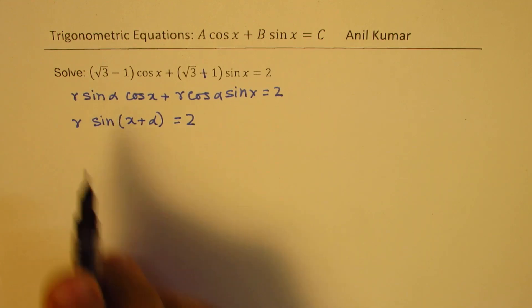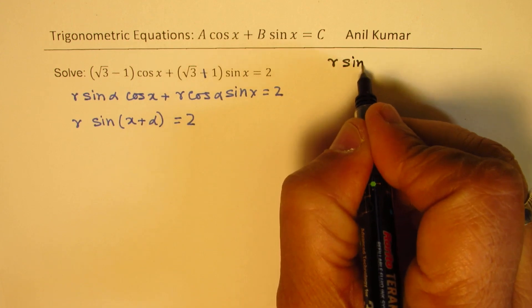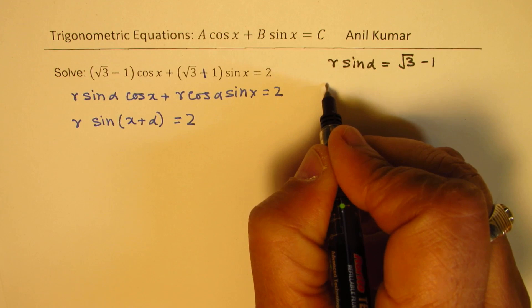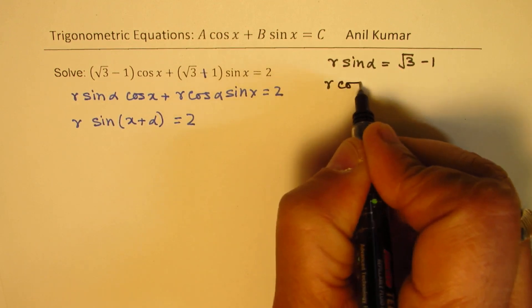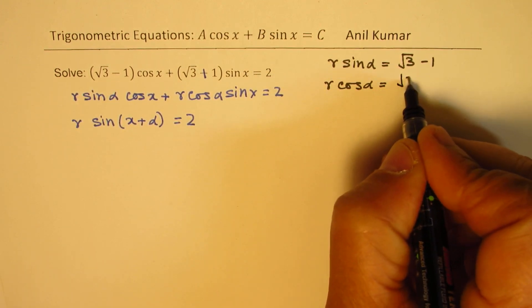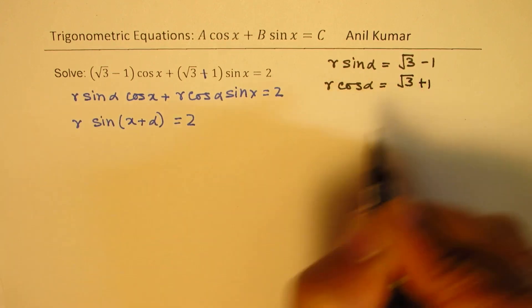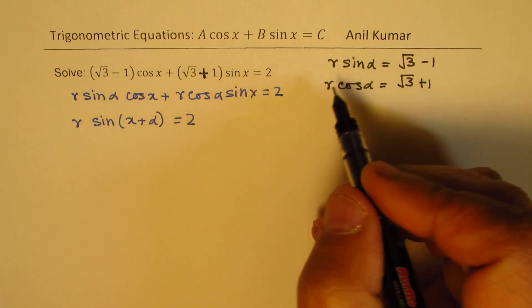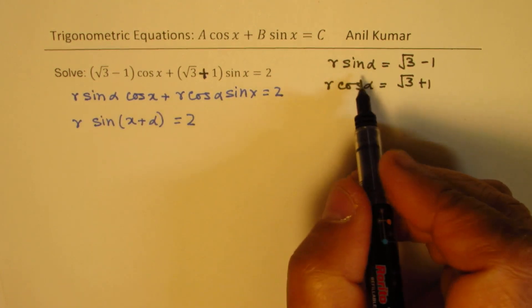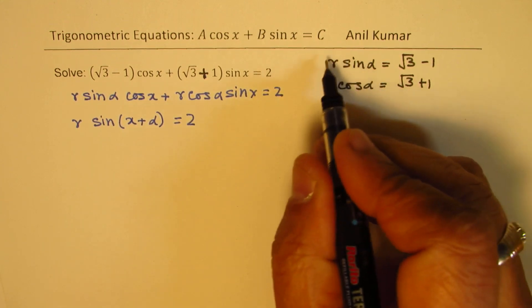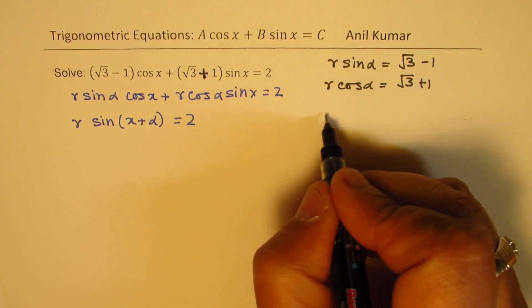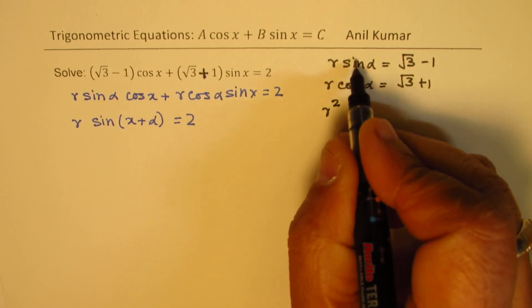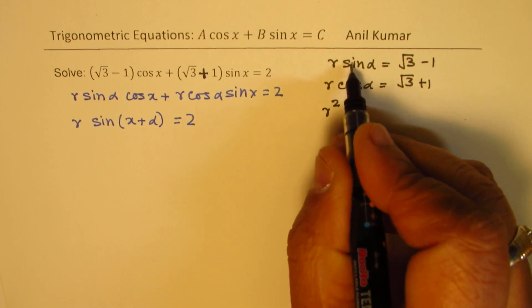That really means that we are going to write r sine alpha as equal to square root of 3 minus 1, and r cos alpha as equal to square root of 3 plus 1. There was a typing error, I made it plus 1. Now clearly from here, we get the value of r if we add squares of these.